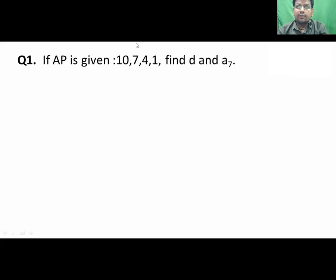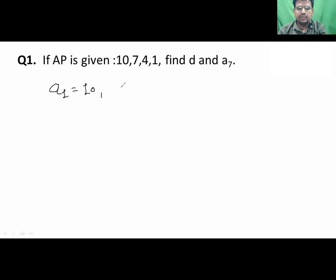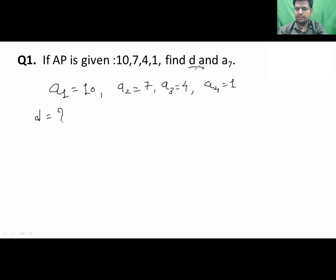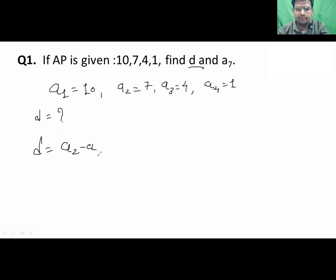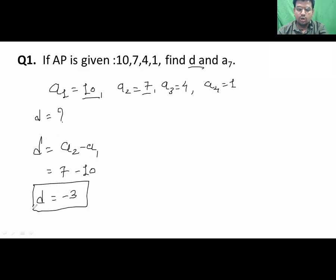Let us see an example using this formula. The given AP is 10, 7, 4, and 1. So a1 = 10, a2 = 7, a3 = 4, and a4 = 1. First we need to find the common difference d. D = A2 − A1 = 7 − 10 = −3. So the common difference is −3.